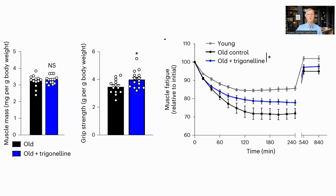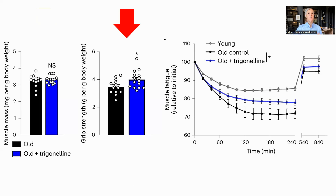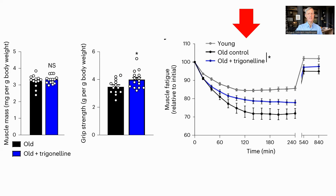What were the physiological effects of trigonelline? There was no impact on lean mass or muscle mass, but there was an increase in grip strength and a reduction in fatigability of the muscle. The time it took muscle to fatigue under continuous electrically stimulated load was measured for young, old controls, and old mice supplemented with trigonelline. Trigonelline prevented approximately 50% of the age-related decline.